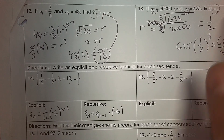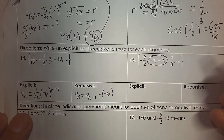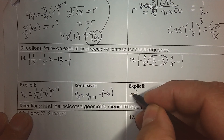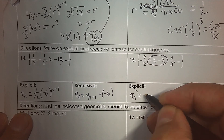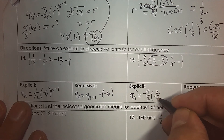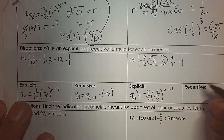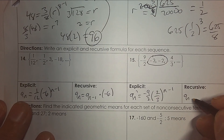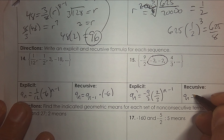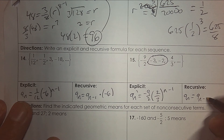For number 15: take two easy consecutive numbers. The explicit is negative 9 over 2, and that's going to be positive 2 thirds to the n minus 1. The recursive says: take the term before it and multiply it by 2 thirds.